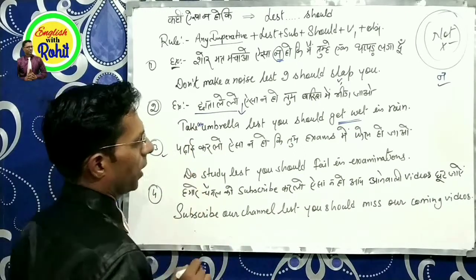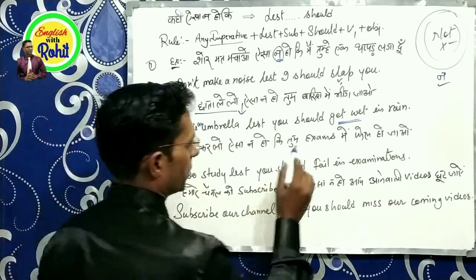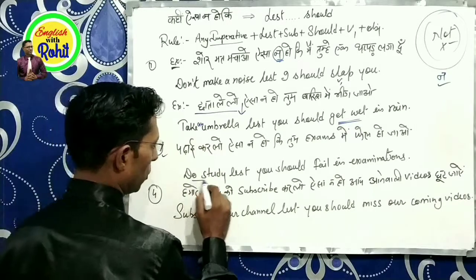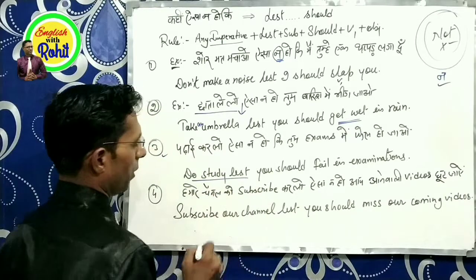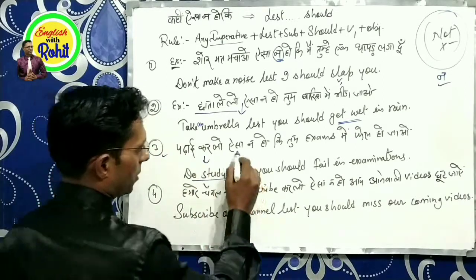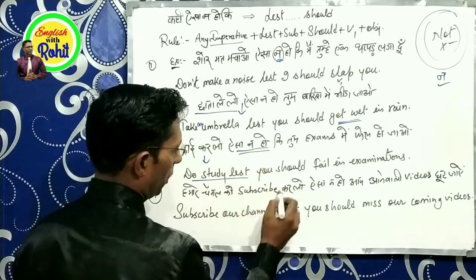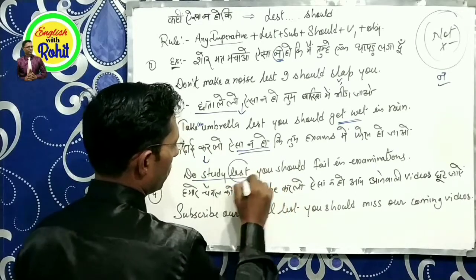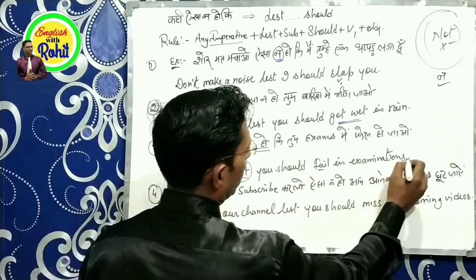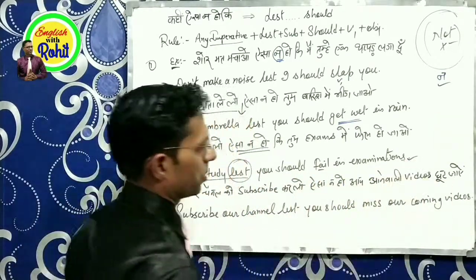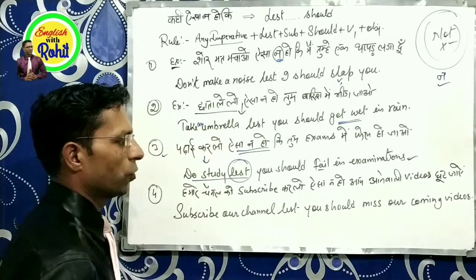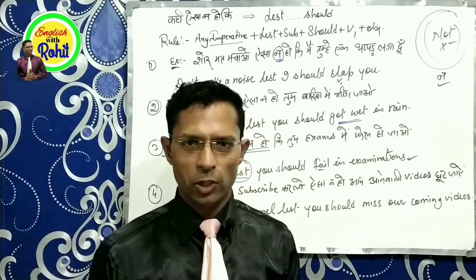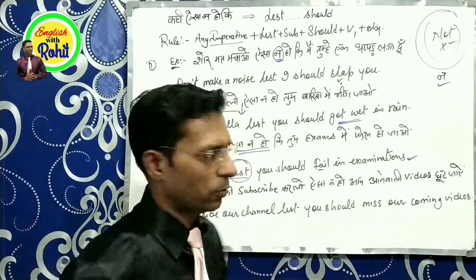पढ़ाई कर लो, ऐसा ना हो कि तुम्हें exams में fail हो जाओ। तो: 'Do study' — ये भी एक imperative sentence है। ऐसा ना हो कि — 'Lest you should fail in the examinations.' You should fail in the examinations — मतलब ऐसा ना हो कि आप fail हो जाओ, इसलिए पढ़ाई कर लो।